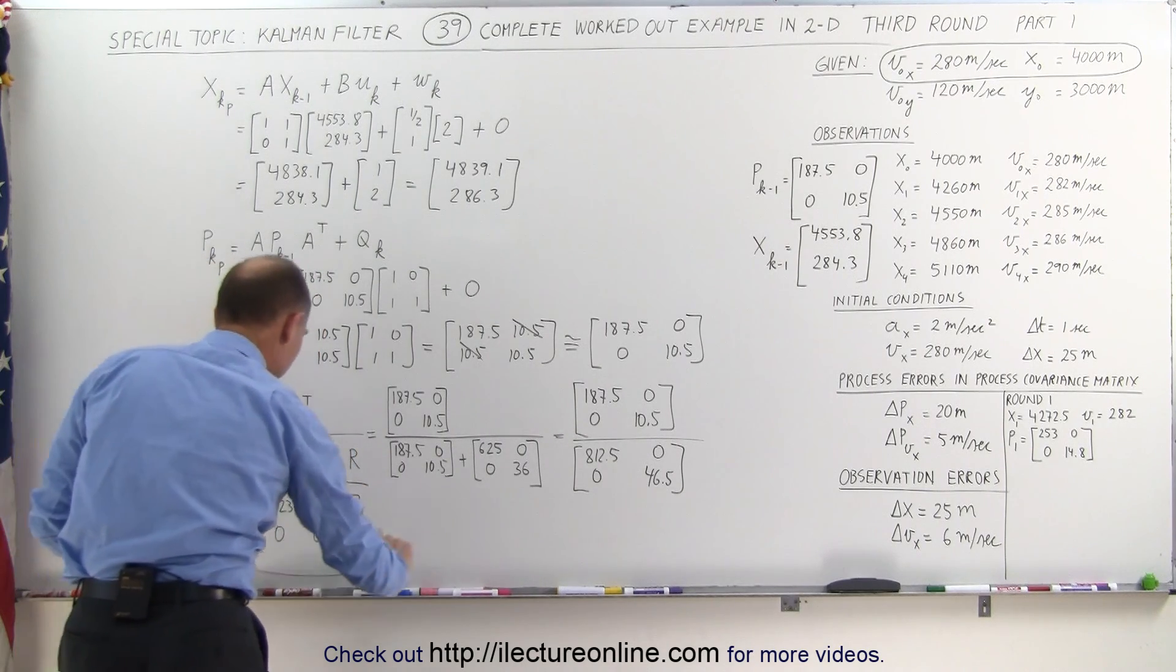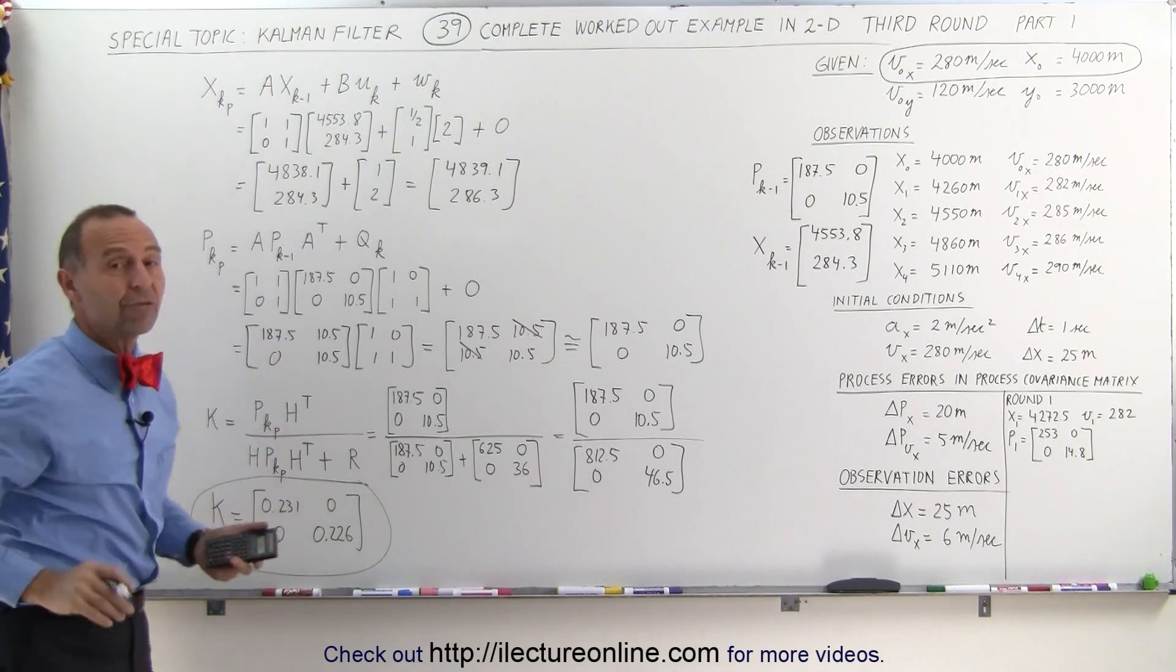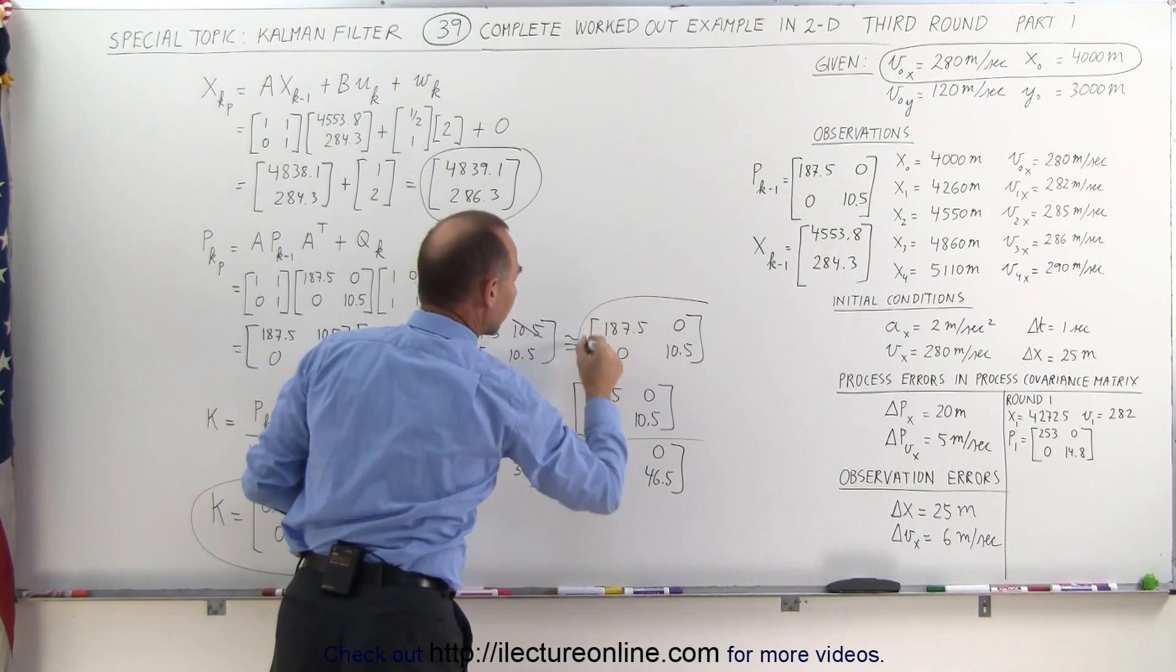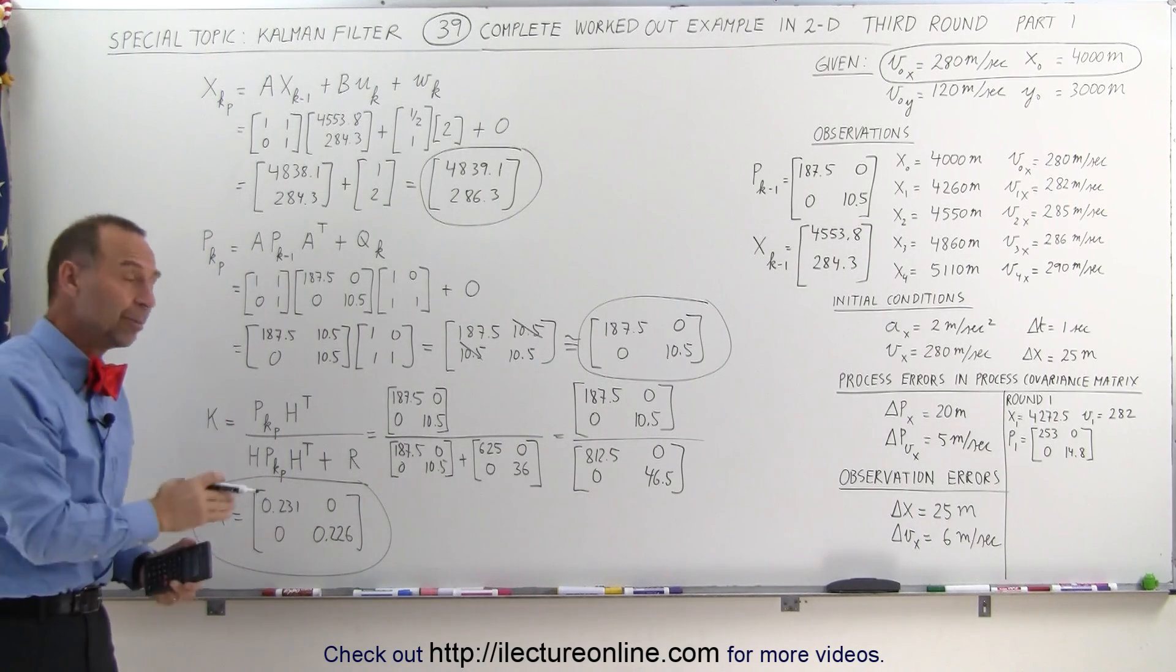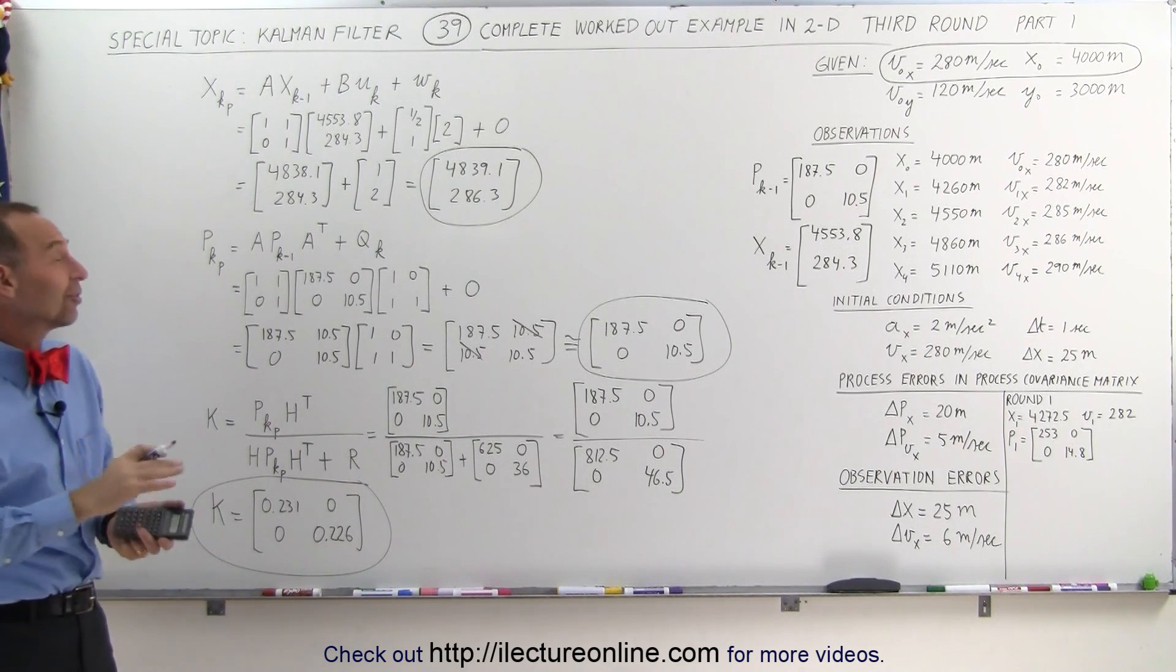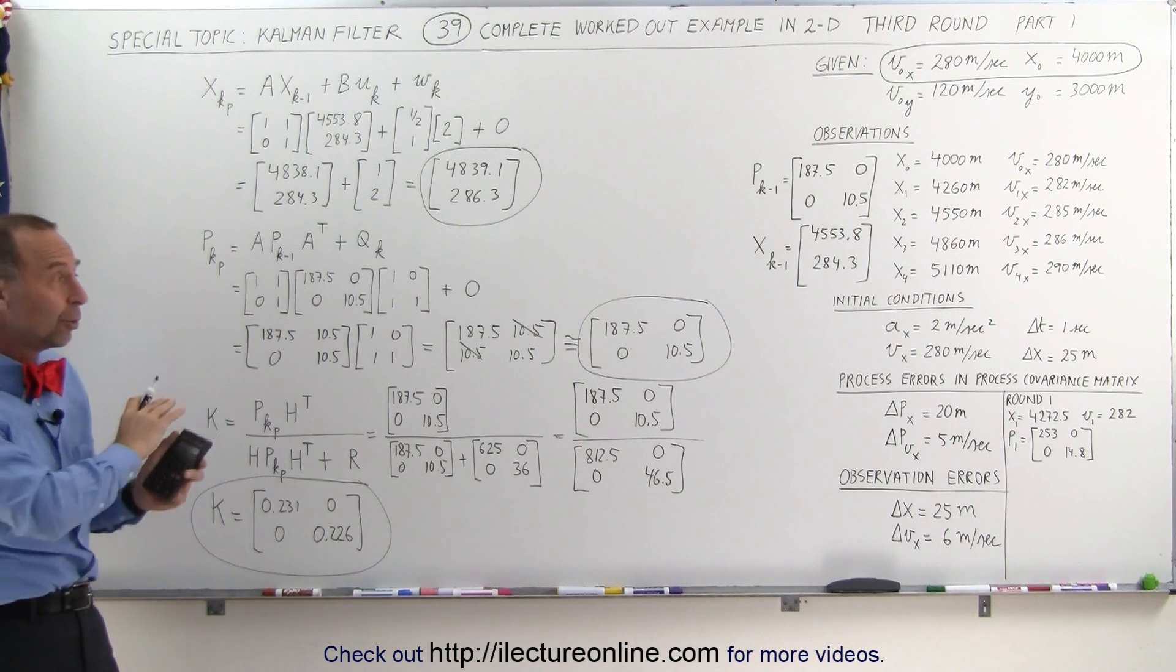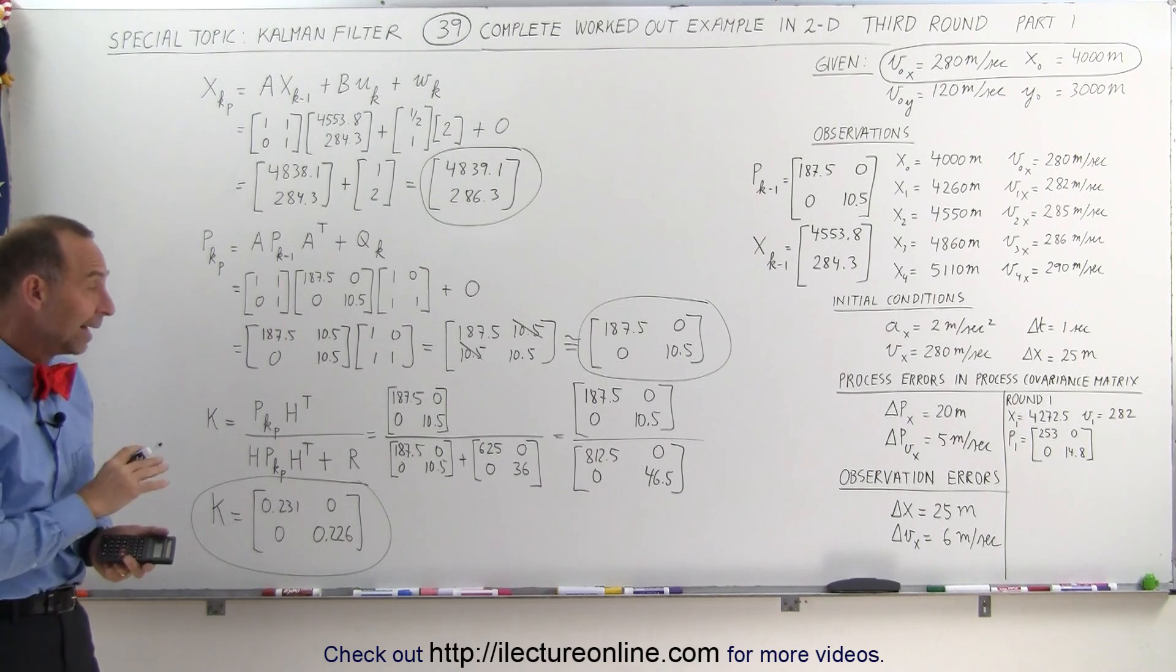And there's our new Kalman gain that we're going to use to come up with a new state matrix based upon the predicted matrix and the new measured values that we're getting into our system. So, we got the new predicted state matrix, we got the new predicted process covariance matrix, and we have the new Kalman gain for round 3. Now we're ready to do the second part of round 3, where we then calculate the new state matrix and the new process covariance matrix, which will then set us up for the next round, for round 4, which in this case we're not going to do. I think three rounds is enough. We'll graph what the three rounds look like to get a really good idea of how the Kalman gain process works. And that's how it's done.